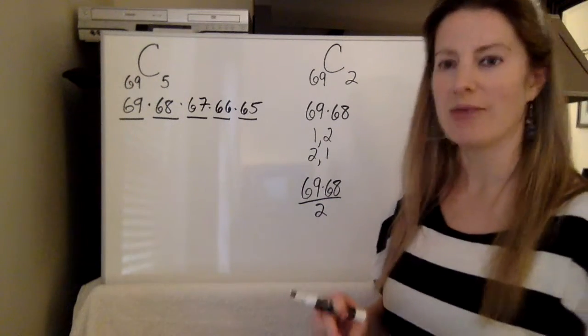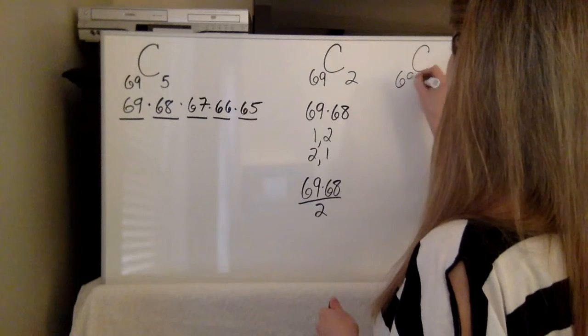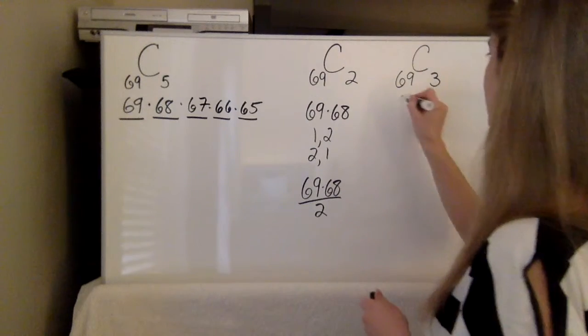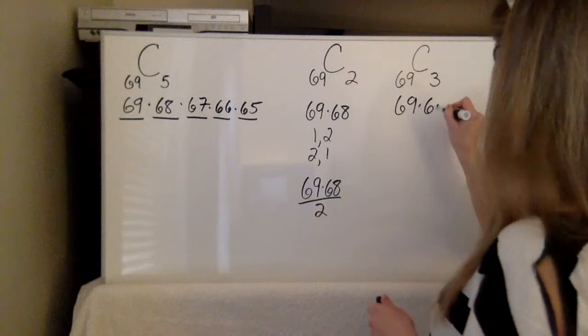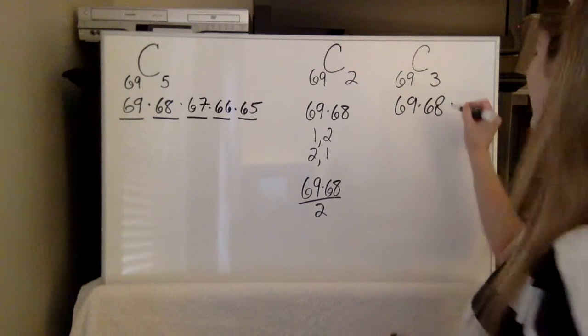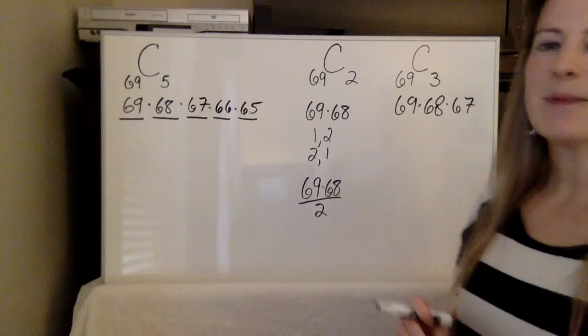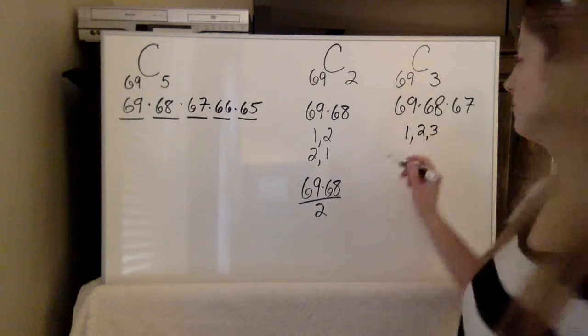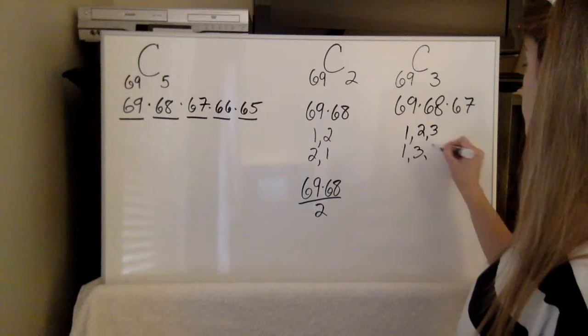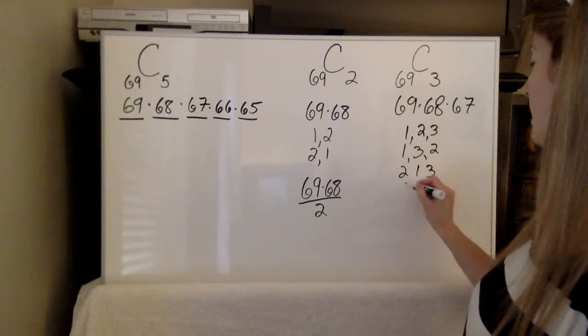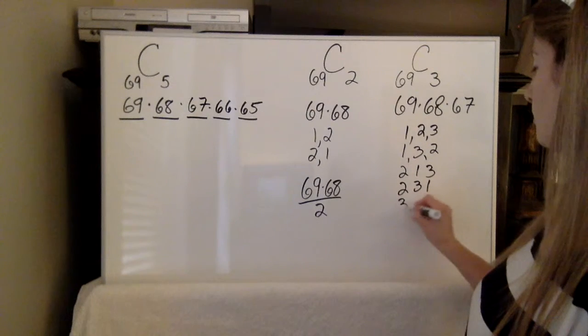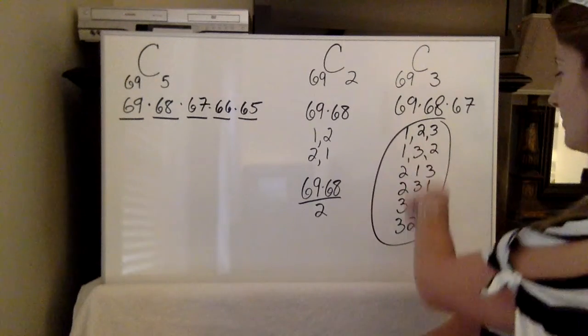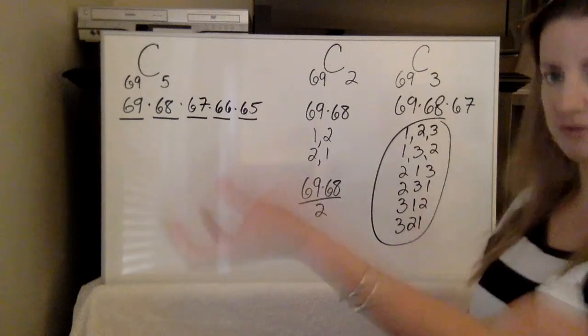Now let me show you another way we can think about it where we increase it and this way might allow you to see it better. So again, 69 times 68 times 67. But then remember, let's say the numbers were 1, 2, 3 just to make it easy. Well I could also get 1, 3, 2. And I could also get 2, 1, 3. And 2, 3, 1. And 3, 1, 2. And 3, 2, 1.